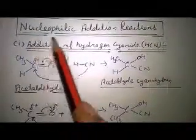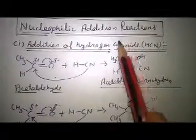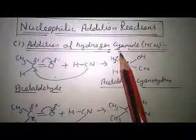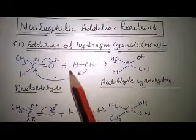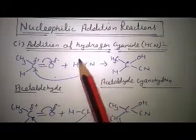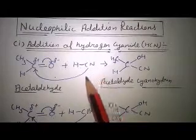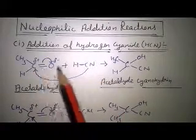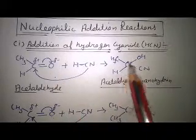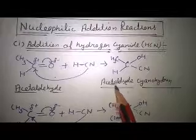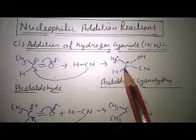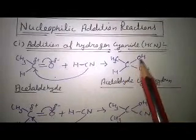Students, now we are doing the nucleophilic reaction of aldehyde and ketone. The first reaction is addition of hydrogen cyanide. This is acetaldehyde. Hydrogen cyanide acts as the nucleophile — here cyanide is negative and hydrogen is positive. Cyanide attaches with the positively charged carbon, and H+ hydrogen attaches with the negatively charged oxygen. The product formed is aldehyde cyanohydrin, in which cyanide is attached with the carbon and H+ ion is attached with the oxygen.